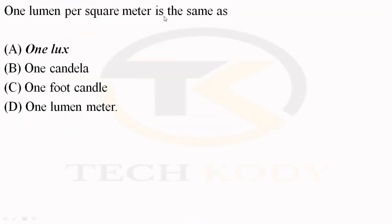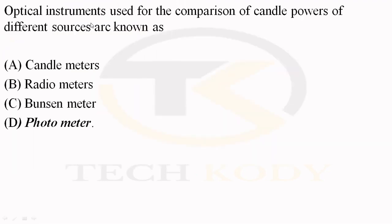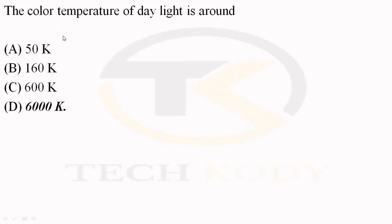One lumen per square meter is same as one lux. The optical instrument used for the comparison of the candle power of different sources of arc is known as photometer. The color temperature of daylight is around 6000 Kelvin.